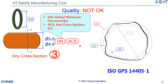Now the function is satisfied and the manufacturing cost is better, because we only control any cross-section within 5.0. However, there is a minor issue: if you apply GN and ACS after the tolerance, it applies to both the upper and lower limits. For the upper limit, this is correct — we want to control the external circumscribed diameter. But for the lower limit, we only need two-point measurement to ensure sufficient material — controlling the external diameter for the minimum limit is unnecessary.